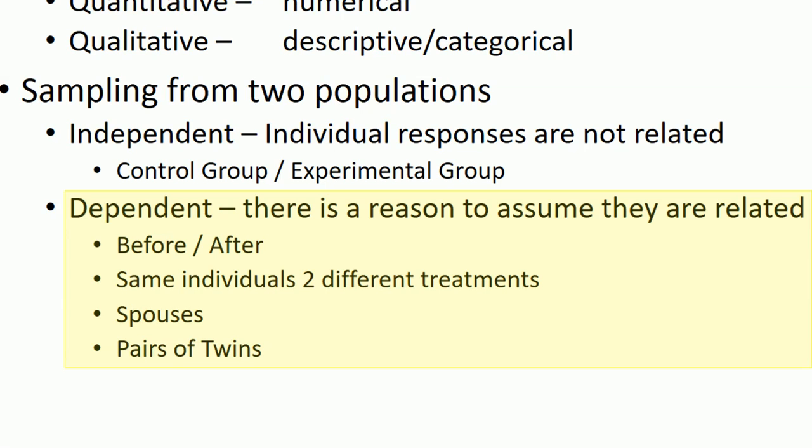It's very likely that spouses are going to have responses that are related to each other, what we're going to call correlated a little later on in this course, as opposed to two unrelated individuals. So you want to pair these people together somehow when you're doing your analysis.